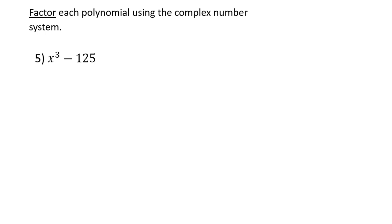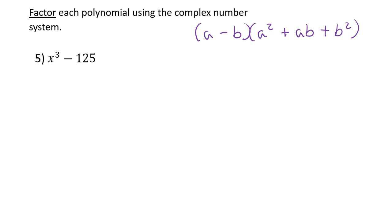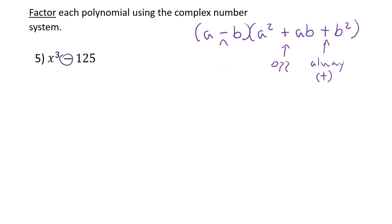This time we have two terms, so there are two possibilities: a sum or difference of squares, or a sum or difference of cubes. We have x-cubed, so this is a difference of cubes. The formula is: (a minus b)(a-squared plus ab plus b-squared). I always teach SOAP: Same sign as the original problem, Opposite sign, Always Positive.